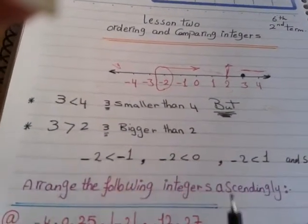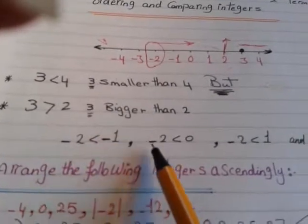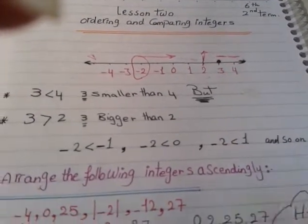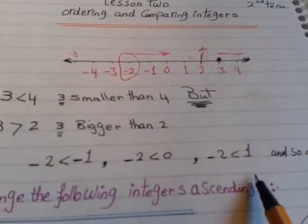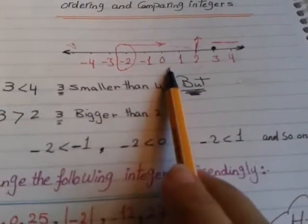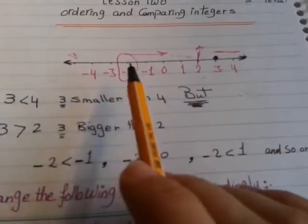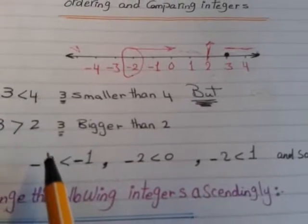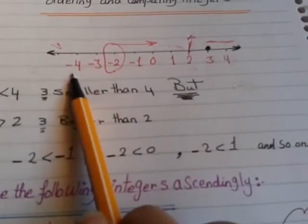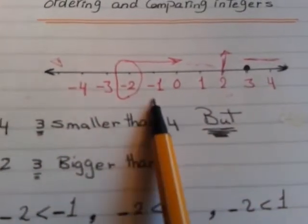That means we get the opposite behavior in negative numbers. Negative two is smaller than negative one, negative two is smaller than zero, negative two is smaller than one, and so on. This means all positive numbers are bigger than all negative numbers, and zero is also bigger than all negative numbers. So the smallest group in the integers is the set of negative numbers.